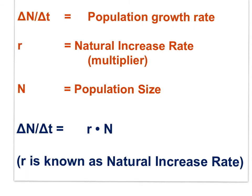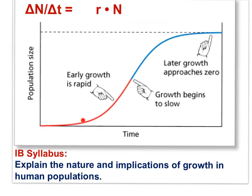Delta N over delta T — the change in population size over a time period — is the population growth rate. The multiplier R is known as the natural increase rate. N is the size of the population. In the red portion of the graph, the population growth rate is rapid because N is getting bigger each time period. In the blue portion, the population growth rate begins to slow — not because N is getting smaller, since the population is continuing to grow, but because the natural increase rate R is getting smaller.